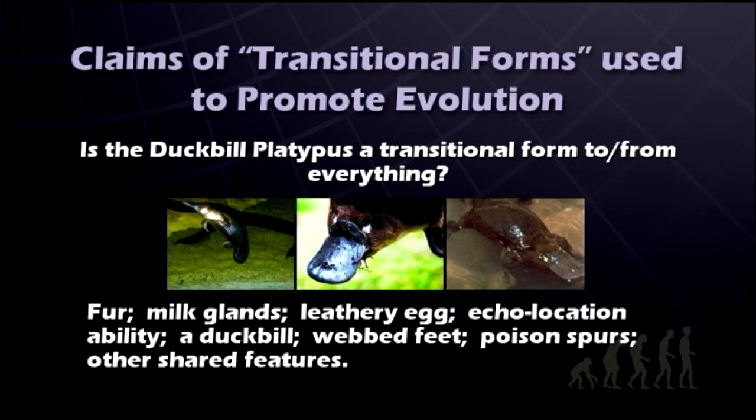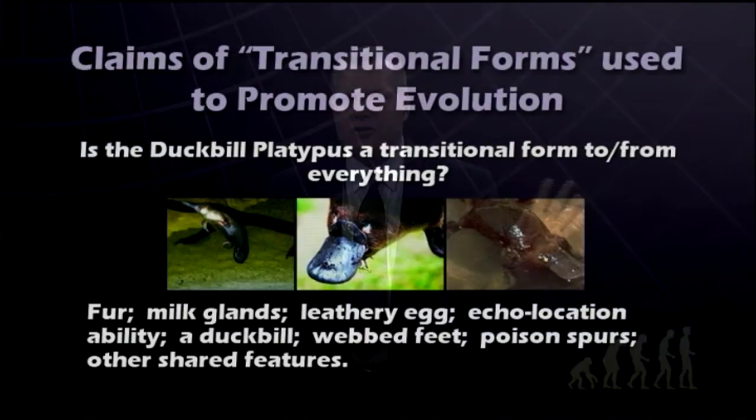Using the same logic as evolutionists, how should we view a duckbill platypus? Is the duckbill platypus a transitional form to and from everything? If we look at it, it has fur, milk glands, leathery eggs, echolocation ability, a duckbill, webbed feet, poison spurs, and other shared features. So the question is: with all of these features from different types of animals, what transitioned to a duckbill platypus? Evolutionists don't talk about duckbill platypuses because it's very hard to postulate any kind of transitional form. In the fossil record, we see duckbill platypuses appear fully formed, nearly identical to those alive today — very consistent with biblical creationism, but completely inconsistent with evolving from some previous form.